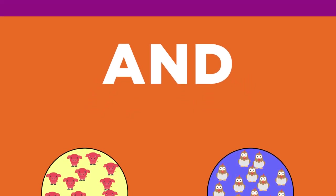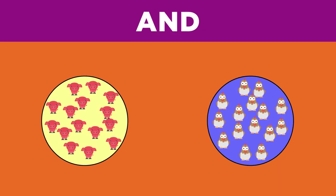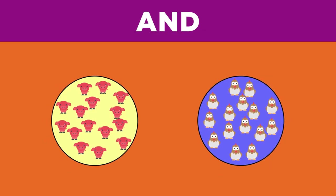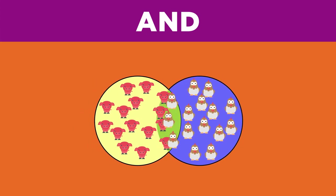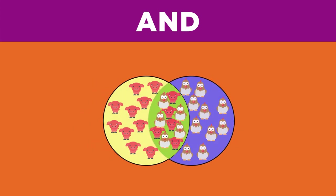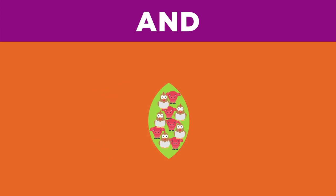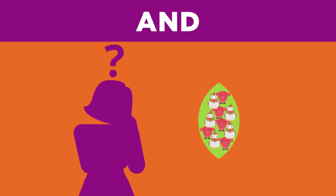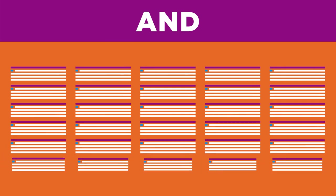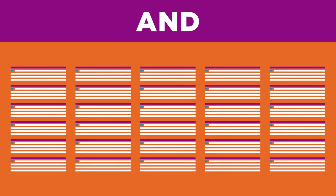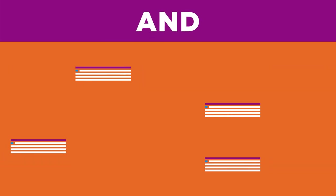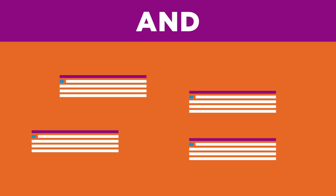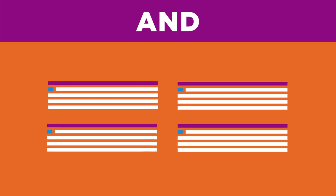Here's how AND works. Using AND between two keywords tells the computer that every search result must include both words. So how does using AND help you when you are doing a search? If you get too many search results, adding a second keyword with AND can help you narrow your search results by focusing on just one aspect of your topic.